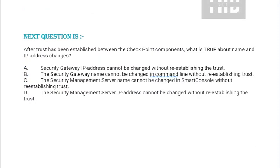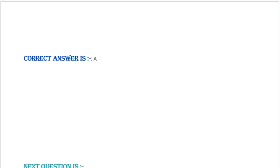Next question: After trust has been established between the Check Point components, what is true about name and IP address changes? Option A: Security gateway IP address cannot be changed without reestablishing the trust. Option B: The security gateway name cannot be changed in command line without reestablishing trust. Option C: The security management server name cannot be changed in SmartConsole without reestablishing trust. Option D: The security management server IP address cannot be changed without reestablishing the trust. Correct answer is Option A.